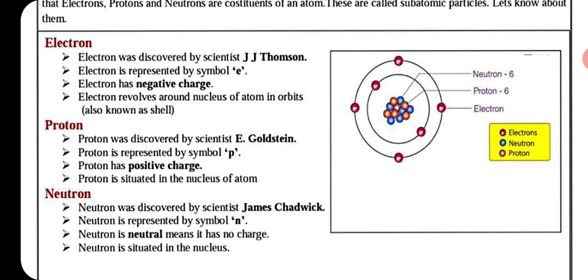आप इधर right side देख सकते हैं — electron अपने-अपने shell में हैं। Outermost shell में electrons हैं, inner में two हैं, तो total six electrons हैं इसमें।